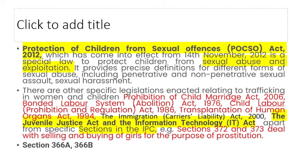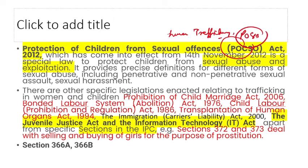The POCSO Act also has clauses related to human trafficking. You should know which act deals with which issue. Other important acts include: Prohibition of Child Marriage Act, Bonded Labour System Abolition Act, Child Labour (Prohibition and Regulation) Act, Transplantation of Human Organs Act, Immigration Carriers' Liability Act, Juvenile Justice Act, and the IT Act — all related to human trafficking.